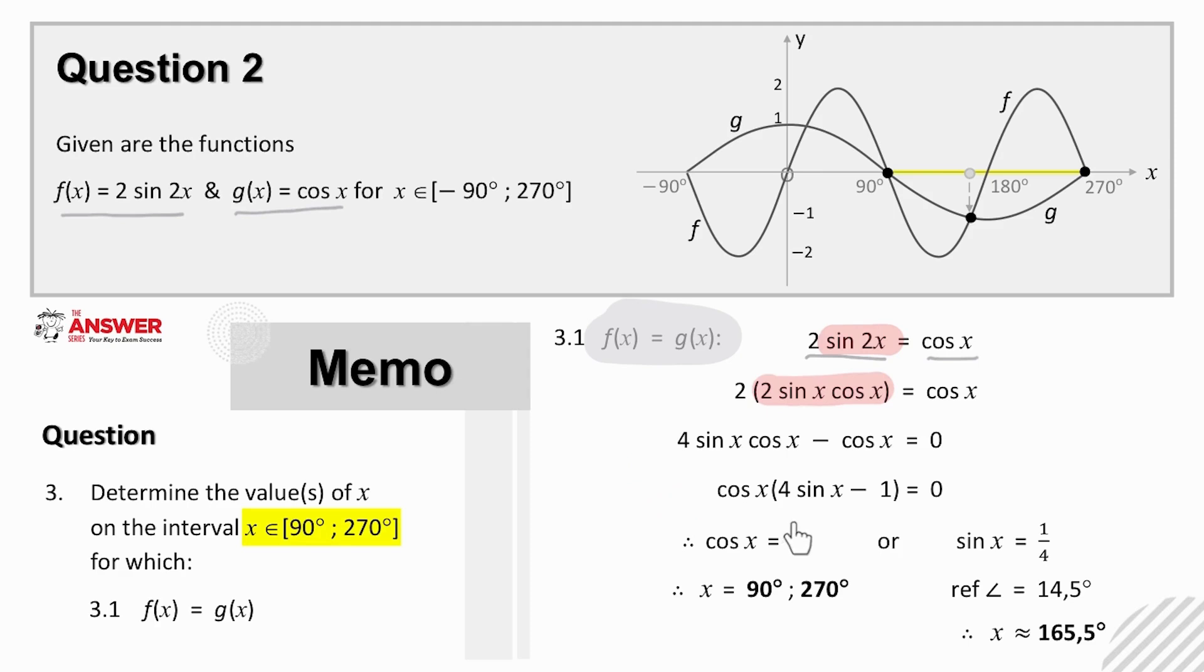To solve here, remember your trig equation thinking. For cos of x being zero indicates that we have cos of an axis angle. And if you make a rough sketch here to help you, you can see clearly from your sketch that cos of x is zero when x is 90 and 270 degrees.